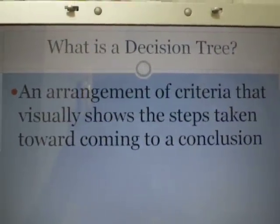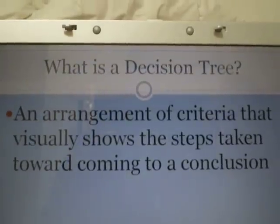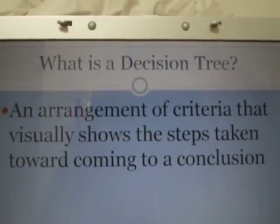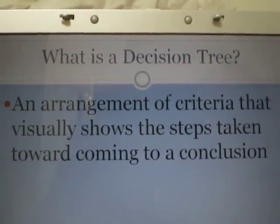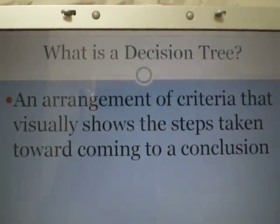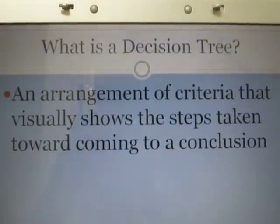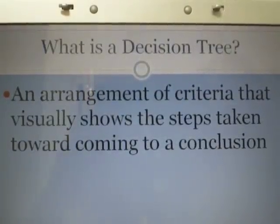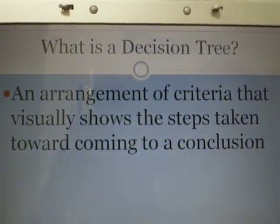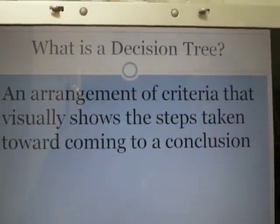A decision tree is an arrangement of criteria that visually shows the steps taken toward coming to a conclusion. The basic idea of a decision tree is to select attributes that are most useful for classifying entities on some criterion.